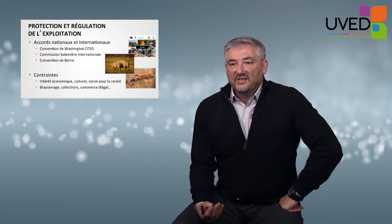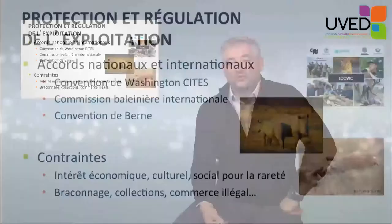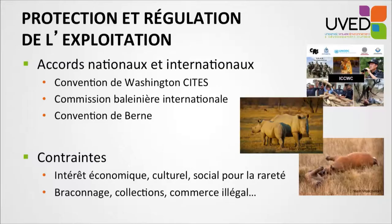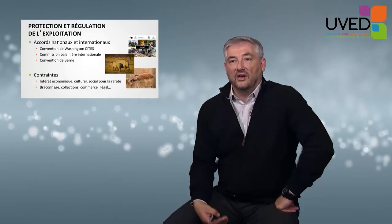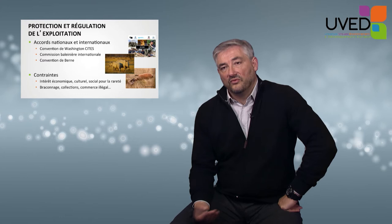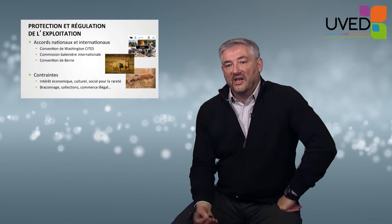Regarding species conservation outside and within protected spaces, we need national legislation and international agreements to regulate exploitation of those species. This includes the Washington Convention by CITES, regulating trade of plant and animal species, the International Whale Commission, and the Bern Convention. However, application of legislation comes up against economic, cultural, and social constraints, amplified by the fact that endangered species are rarer and therefore more expensive, leading to poaching and illegal trade.